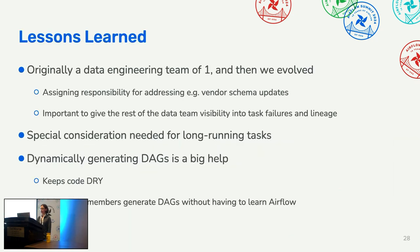To sum up some lessons learned: we're a small organization that started with just me as the data engineering team and evolved from there. We had to address issues like assigning responsibility for vendor schema updates and giving everyone visibility into task failures and lineage. A shared Slack channel where Airflow writes status messages — with points of contact per DAG identified and people DM'd when their DAG fails — has been really helpful. We've had to put special consideration into long-running tasks, and dynamically generating DAGs has been a big help in keeping our code DRY and letting team members generate DAGs without learning all the details of Airflow.